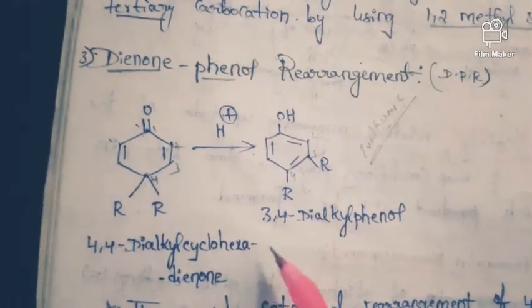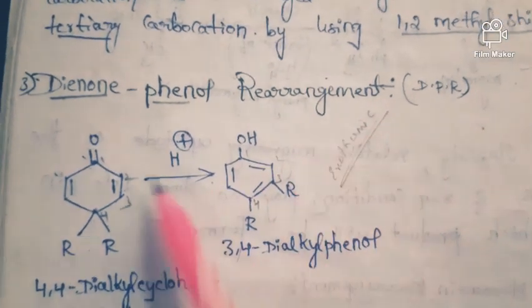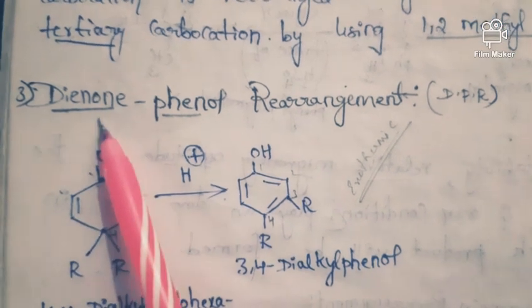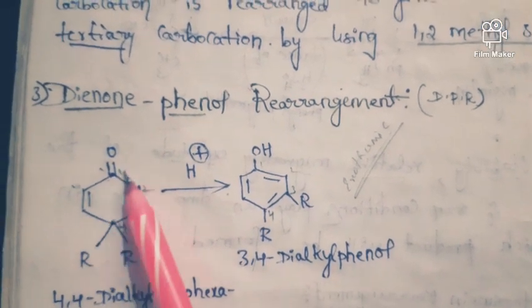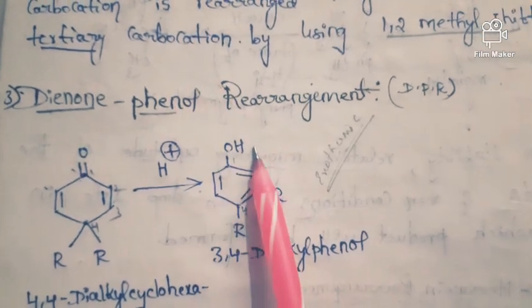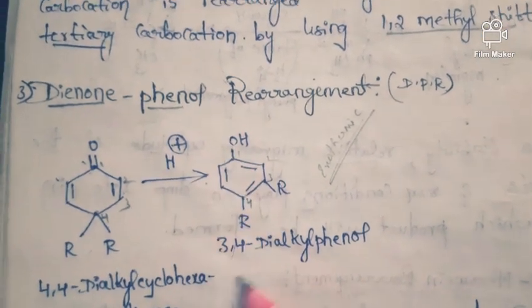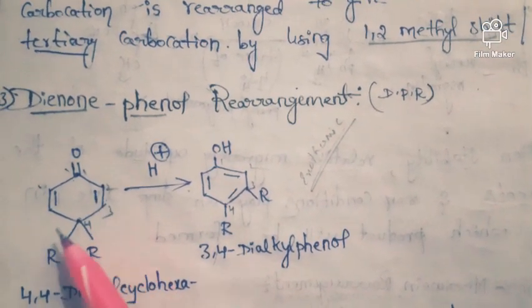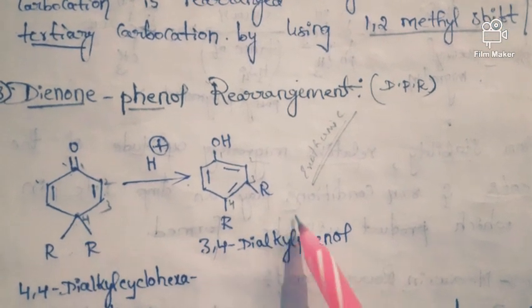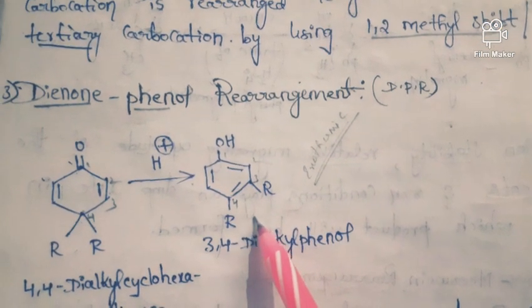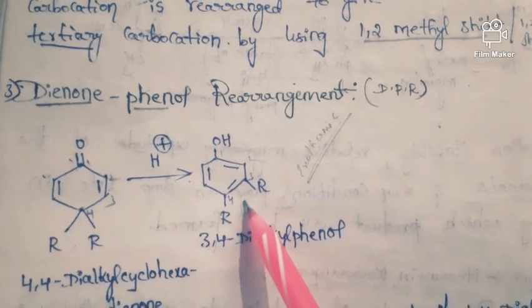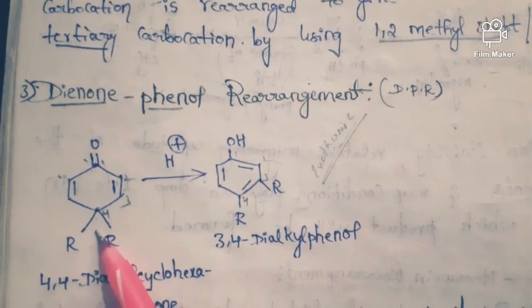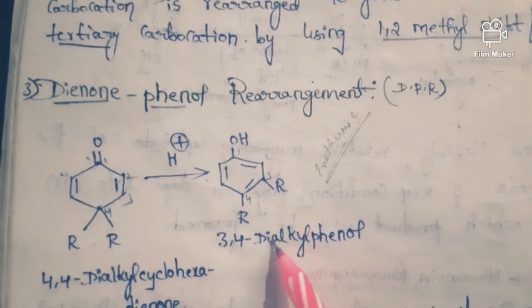The next rearrangement is dienone-phenol rearrangement. 'Diene' means two double bonds, 'one' means one keto group, and finally we get phenol. This rearrangement is exothermic because here the reactant is non-aromatic and it gets converted into an aromatic product, which is more stable. The acid-catalyzed rearrangement of 4,4-dialkyl-cyclohexadienone — where at the fourth position we have two alkyl groups — gives a substituted phenol. This is called dienone-phenol rearrangement.